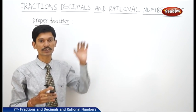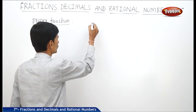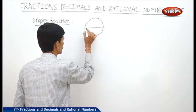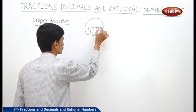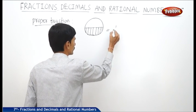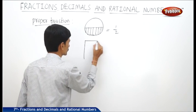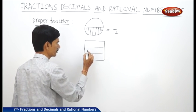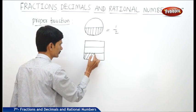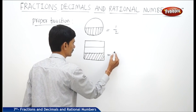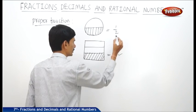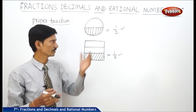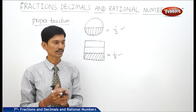A proper fraction is a fraction that represents the part of the whole. For example, if you take a circle and half of it is shaded, out of two equal parts one part is shaded, so this is represented as one by two. For a square divided into three equal parts with one part shaded, this equals one by three. So one by two and one by three are both proper fractions — they represent parts of the whole.